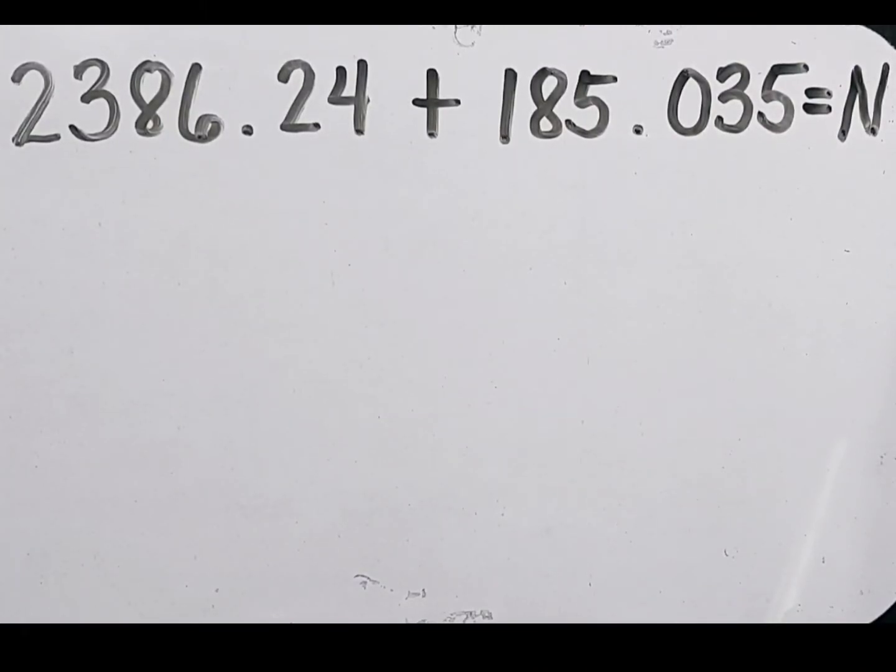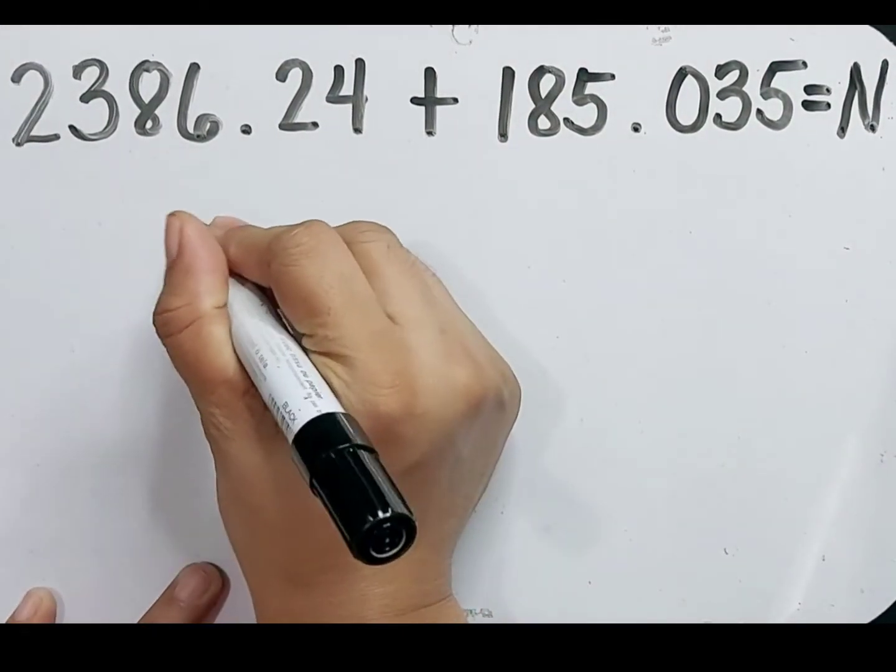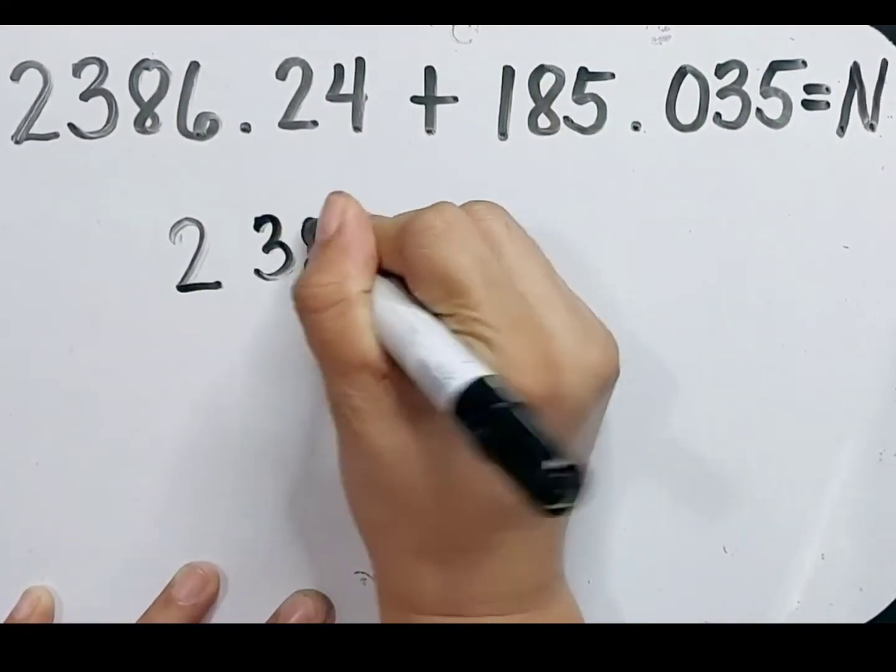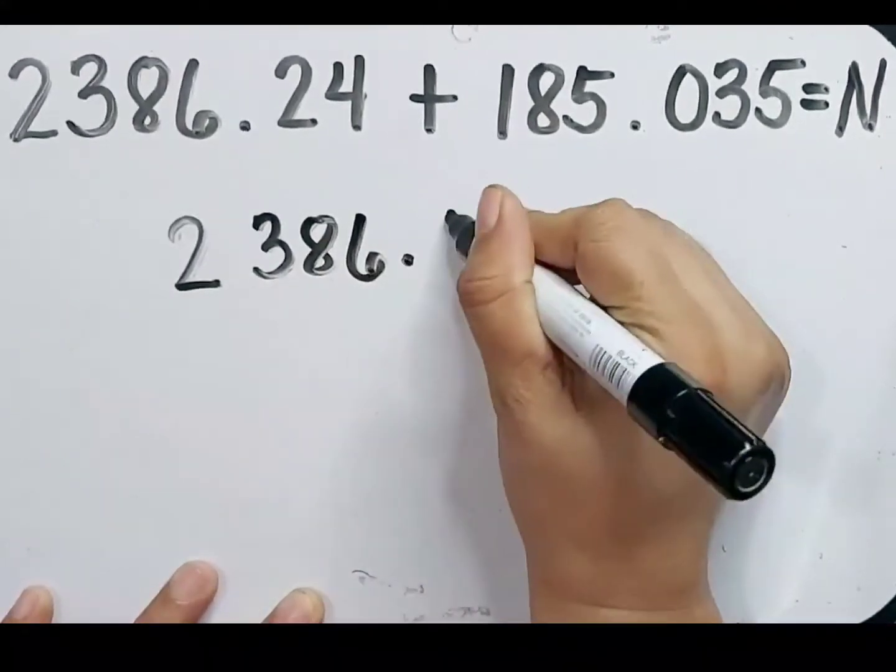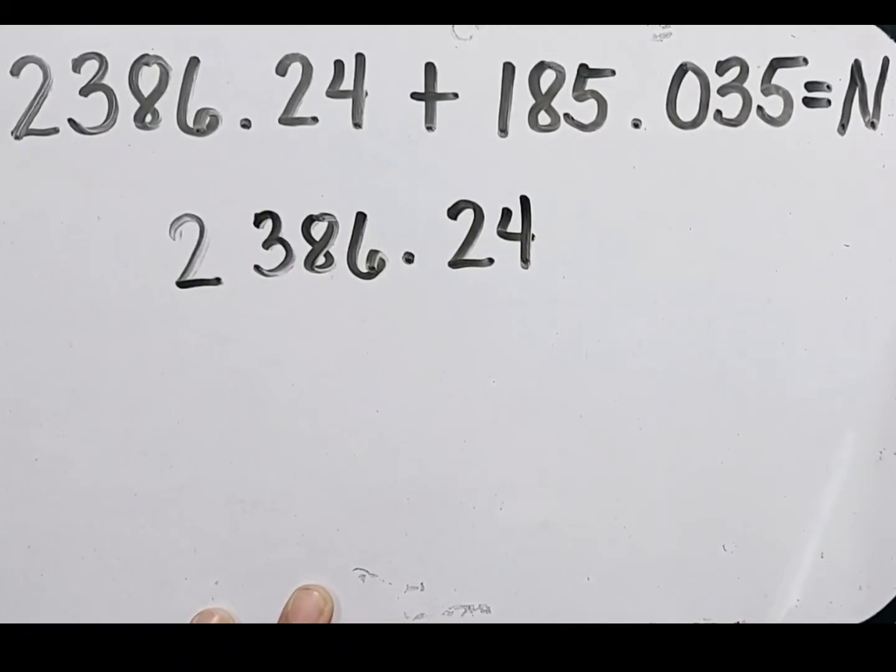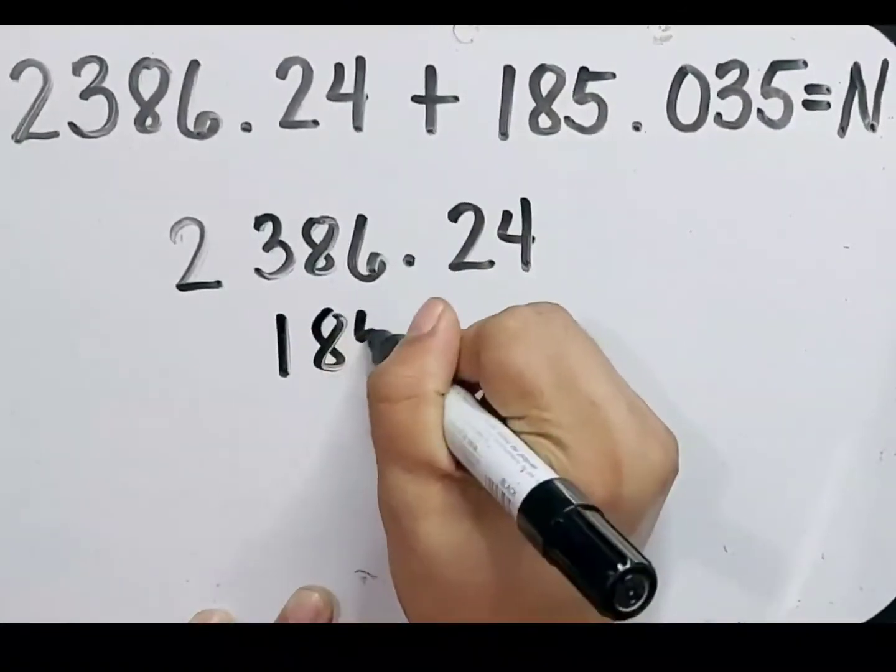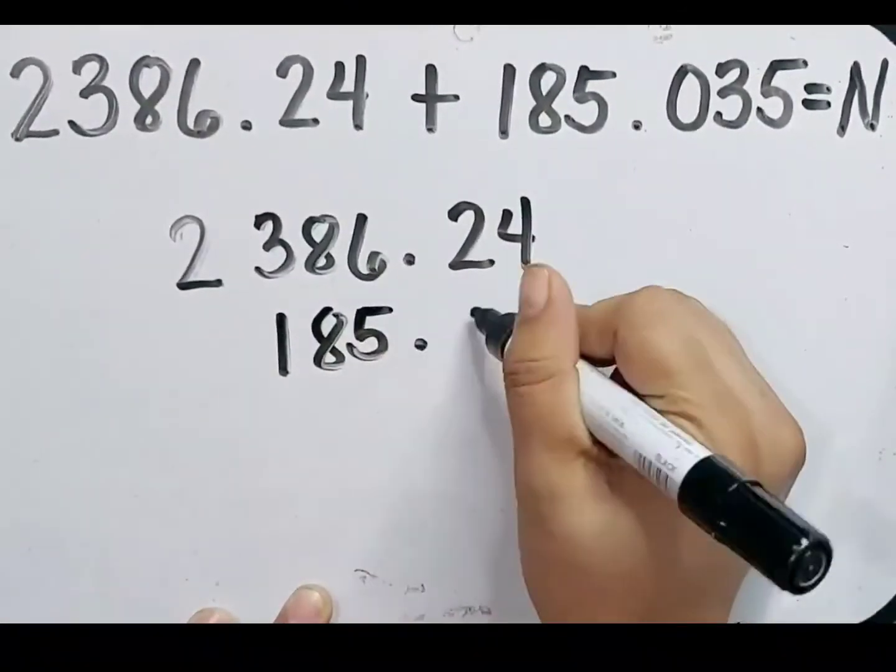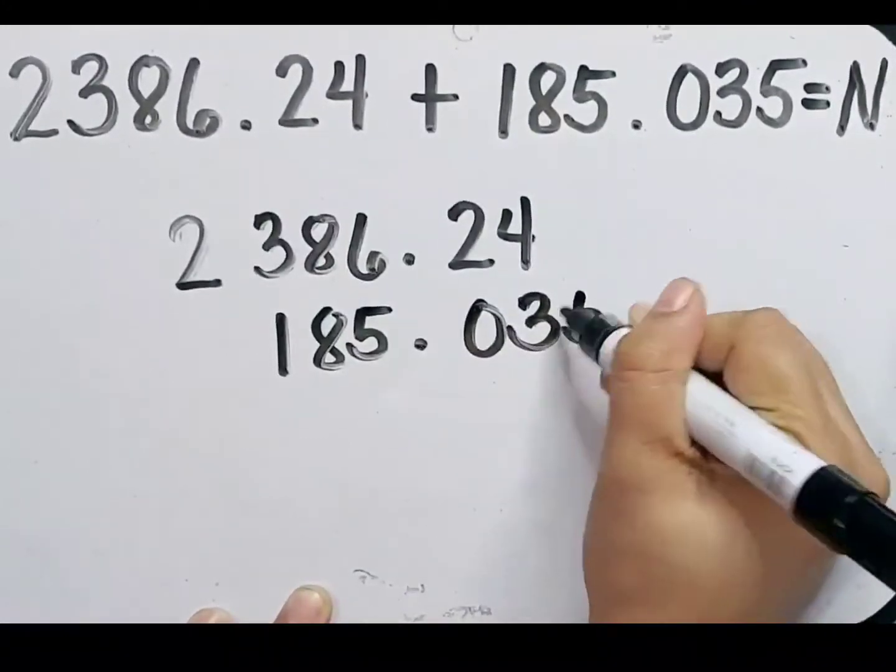Let's have another example. 2,386.24 plus 185.035 equals N. The first step is to write these numbers in a column. We have 2,386.24 plus 185.035 and let's make sure to align the decimal. We have 185.035.